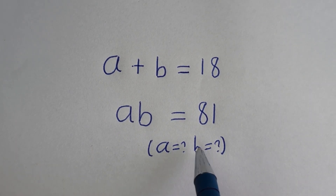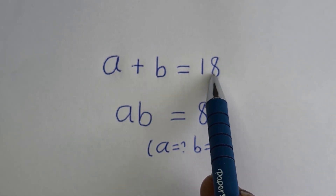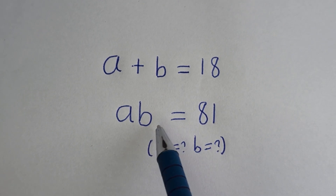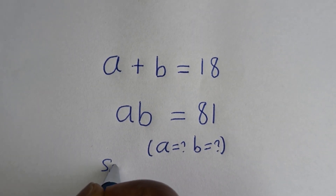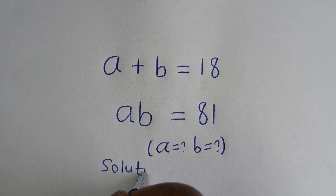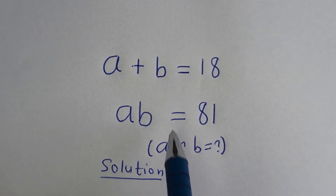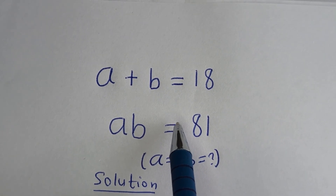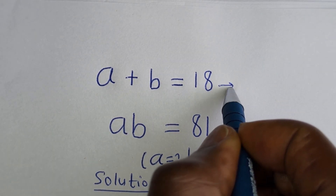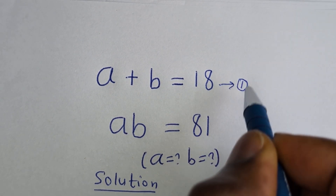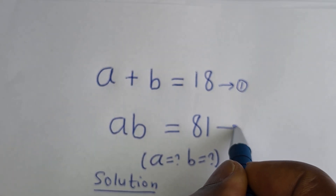Hello. How to solve for A and B in this equation: A plus B is equal to 18, and AB is equal to 81. Solution. From here, A plus B is equal to 18 — let us call this equation 1. And from here, AB is equal to 81 — let us call this equation 2.